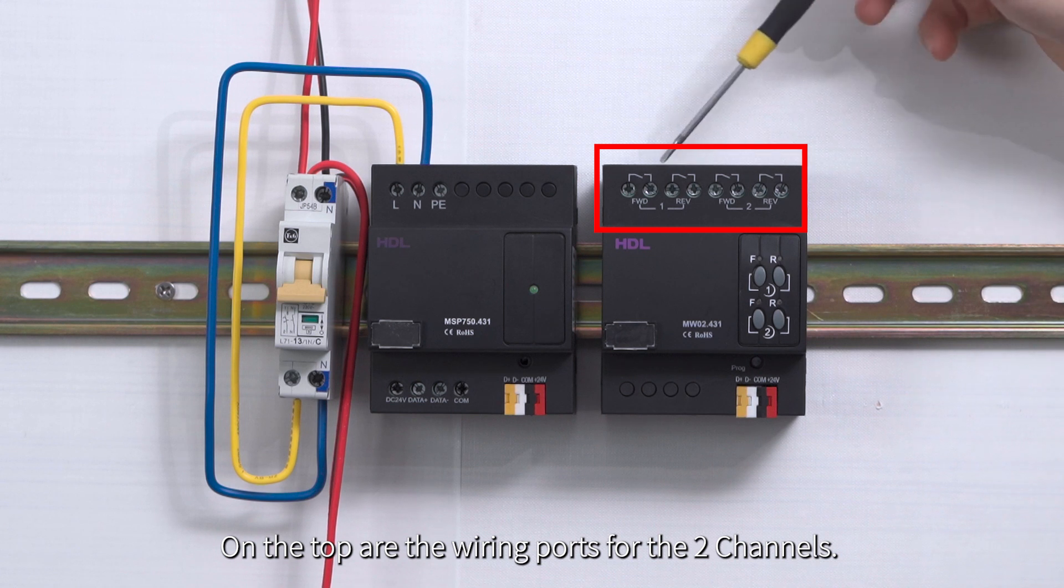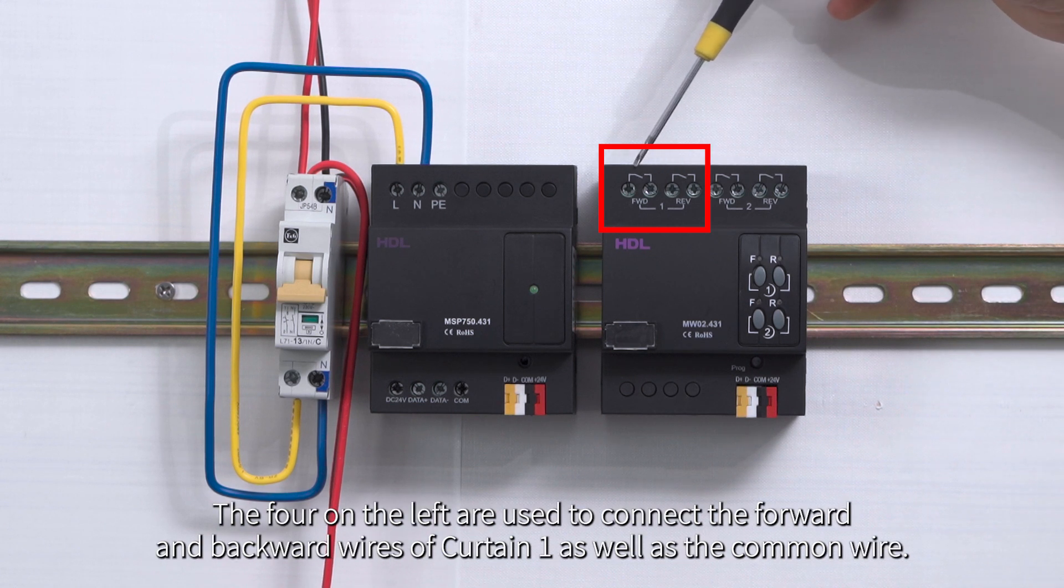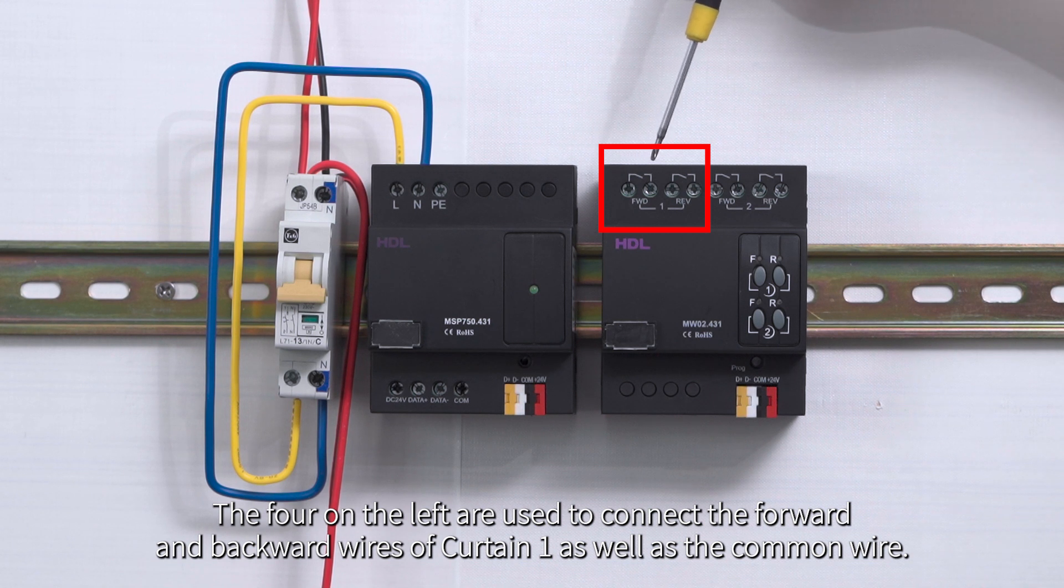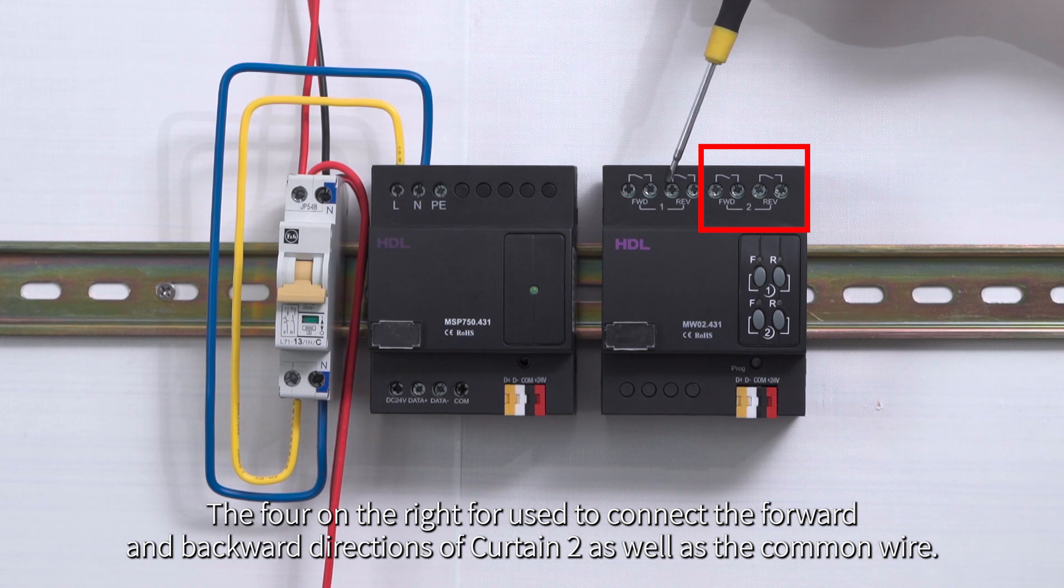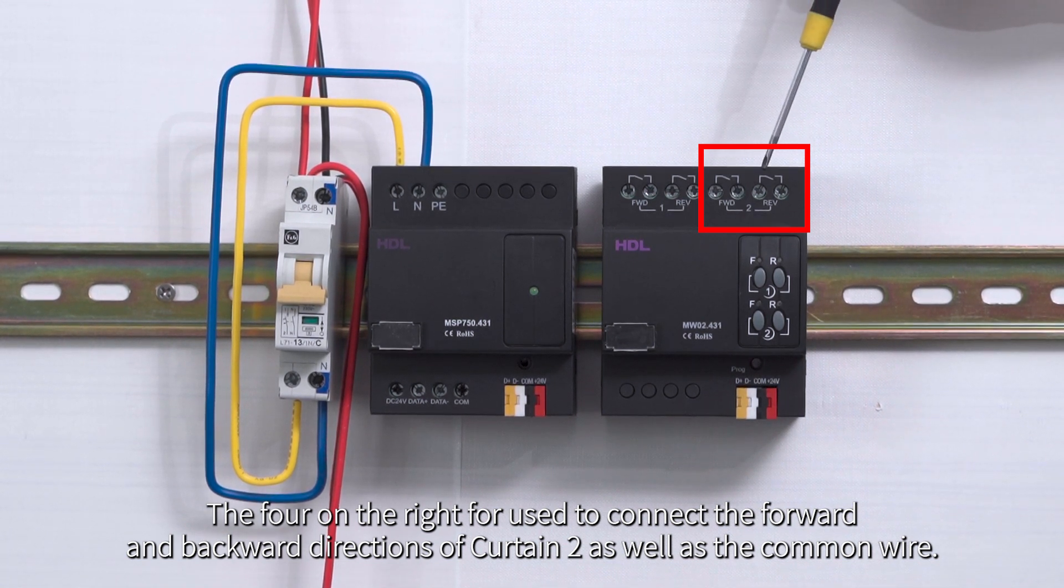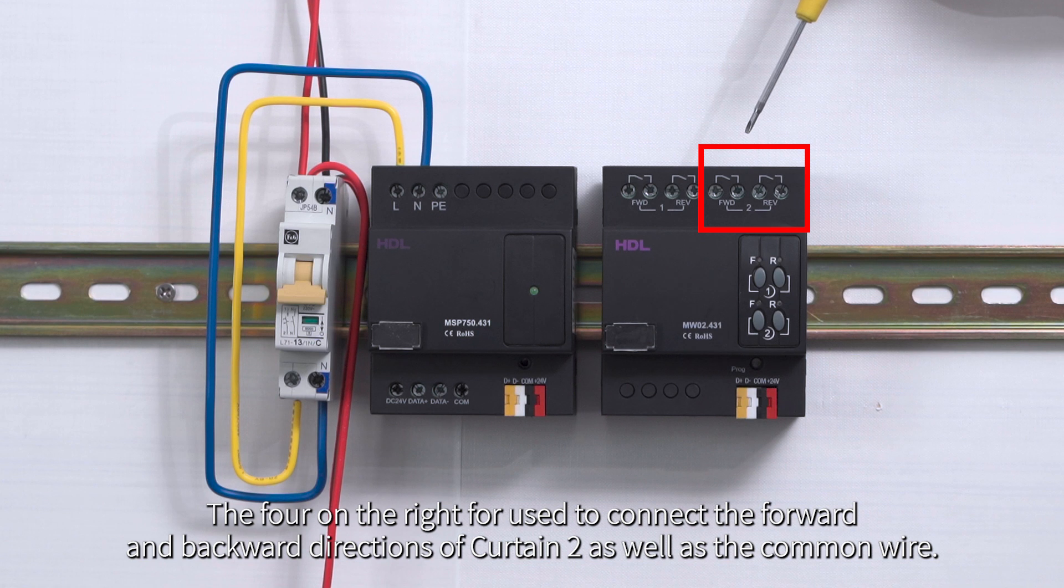On the top are the wiring ports for the two channels. The four on the left are used to connect the forward and backward directions of Curtain 1, as well as the common wire. The four on the right are used to connect the forward and backward directions of Curtain 2, as well as the common wire.